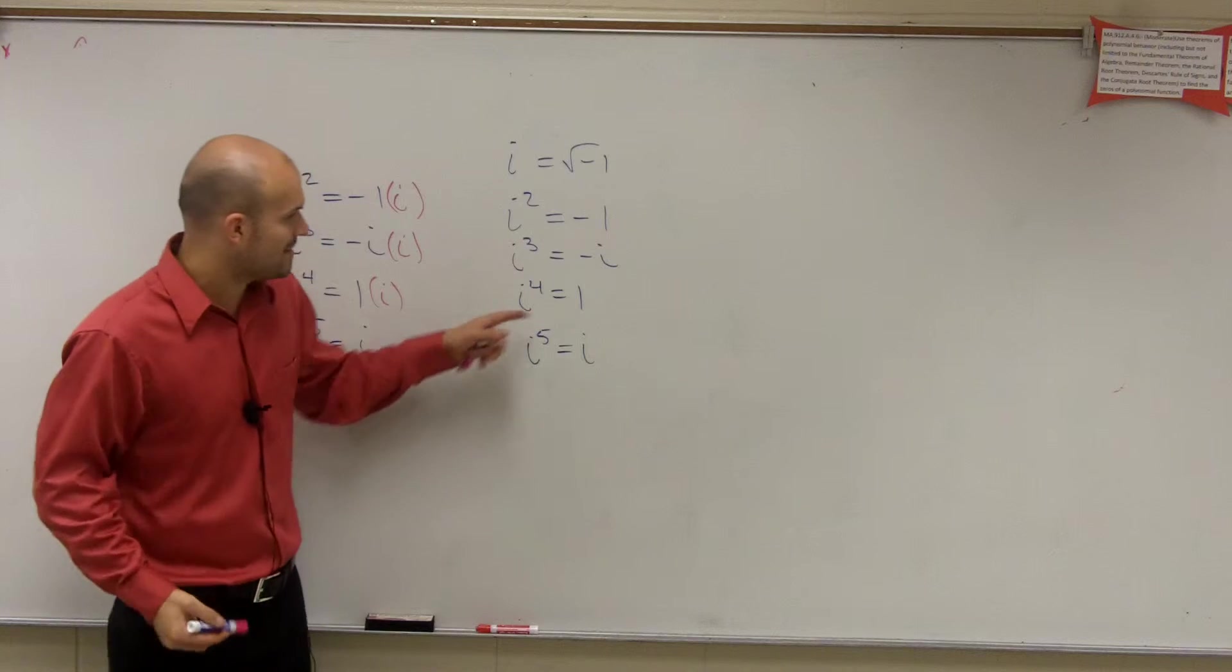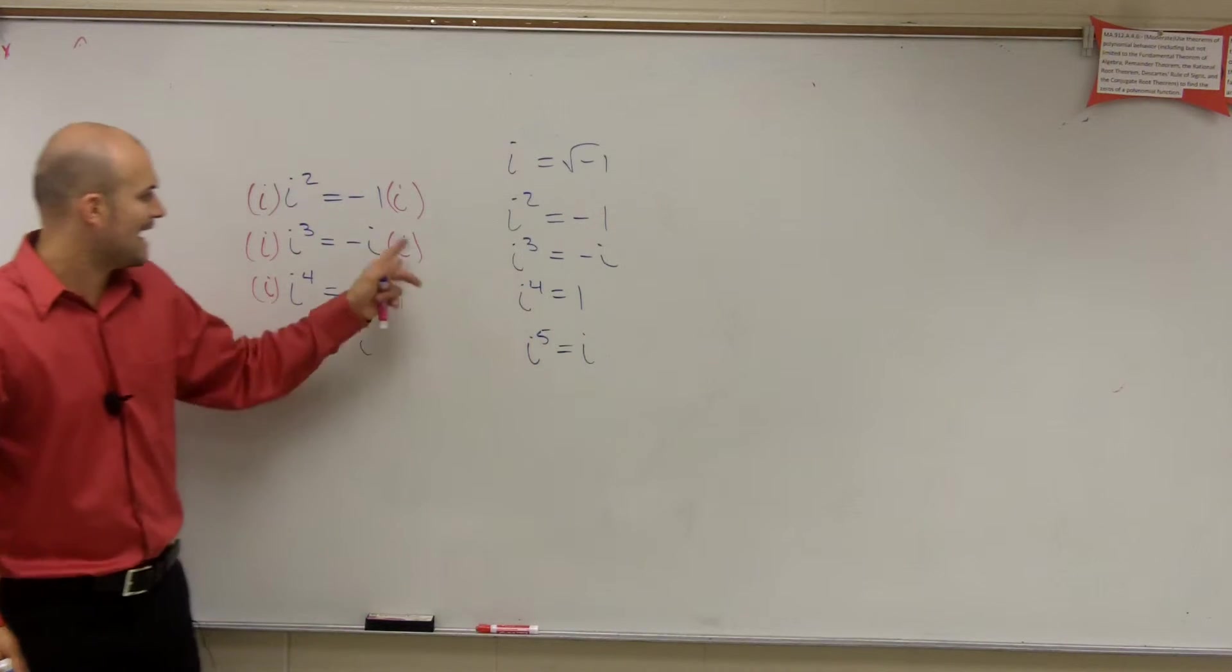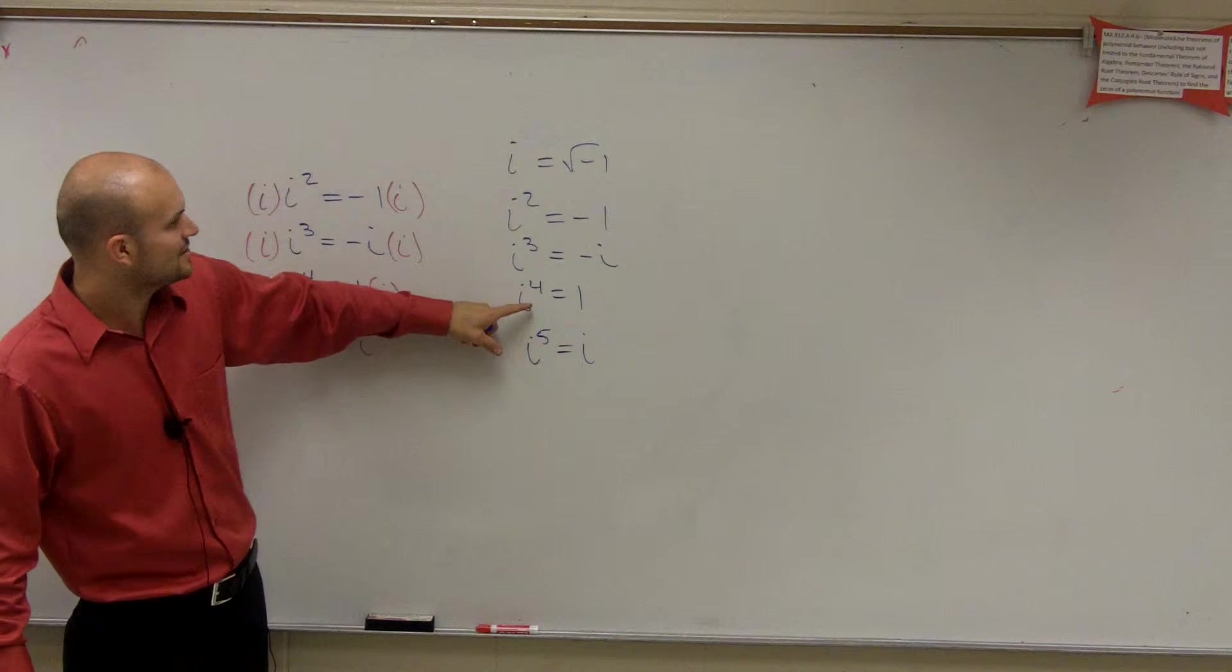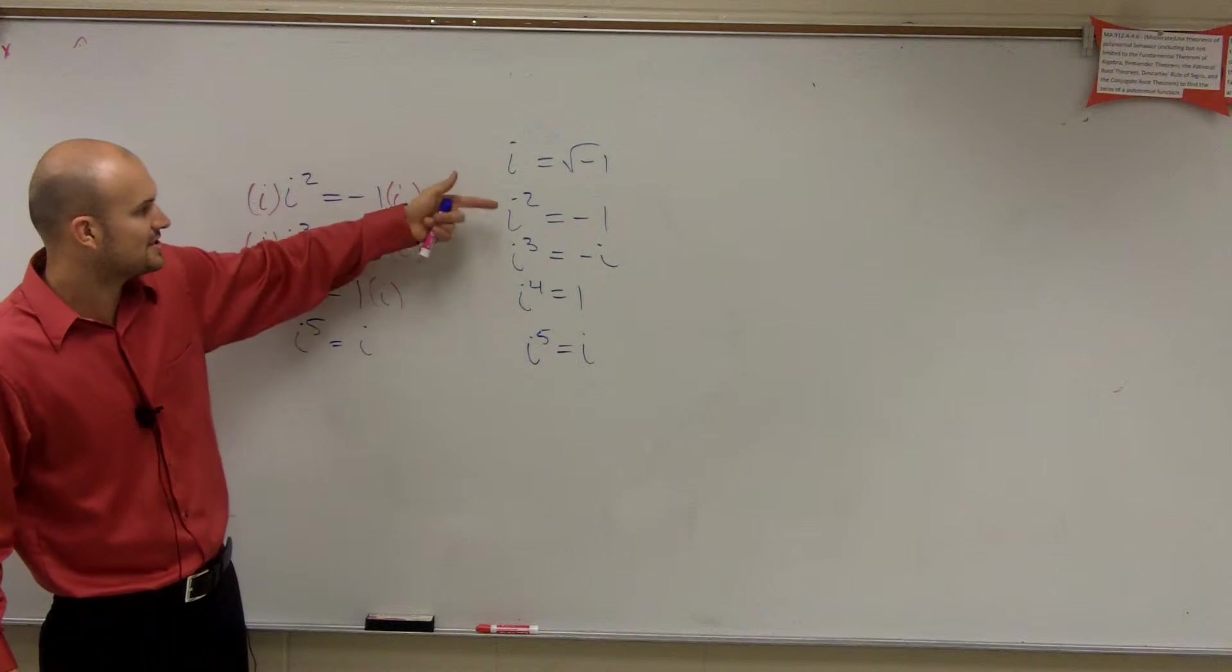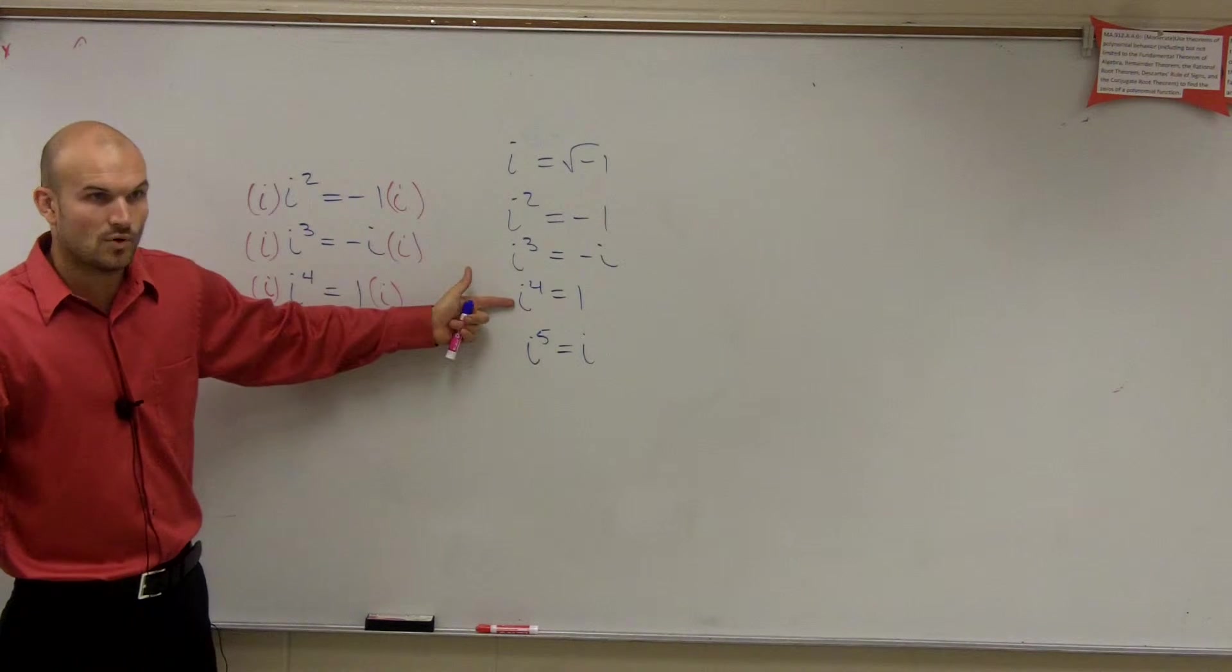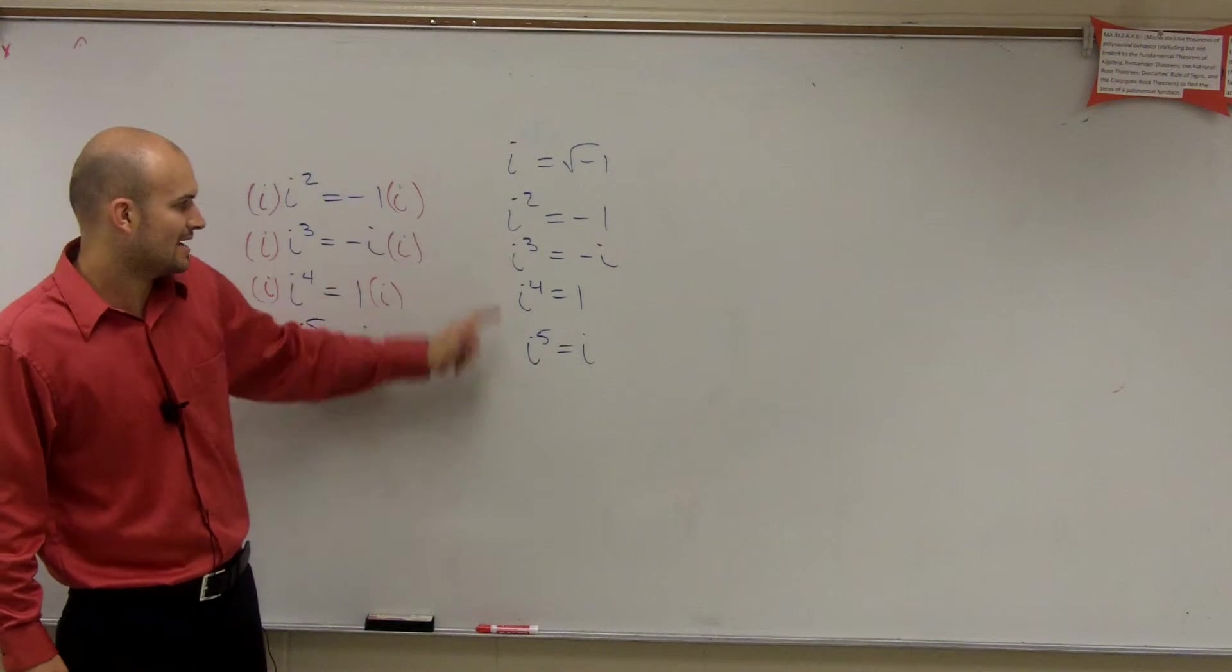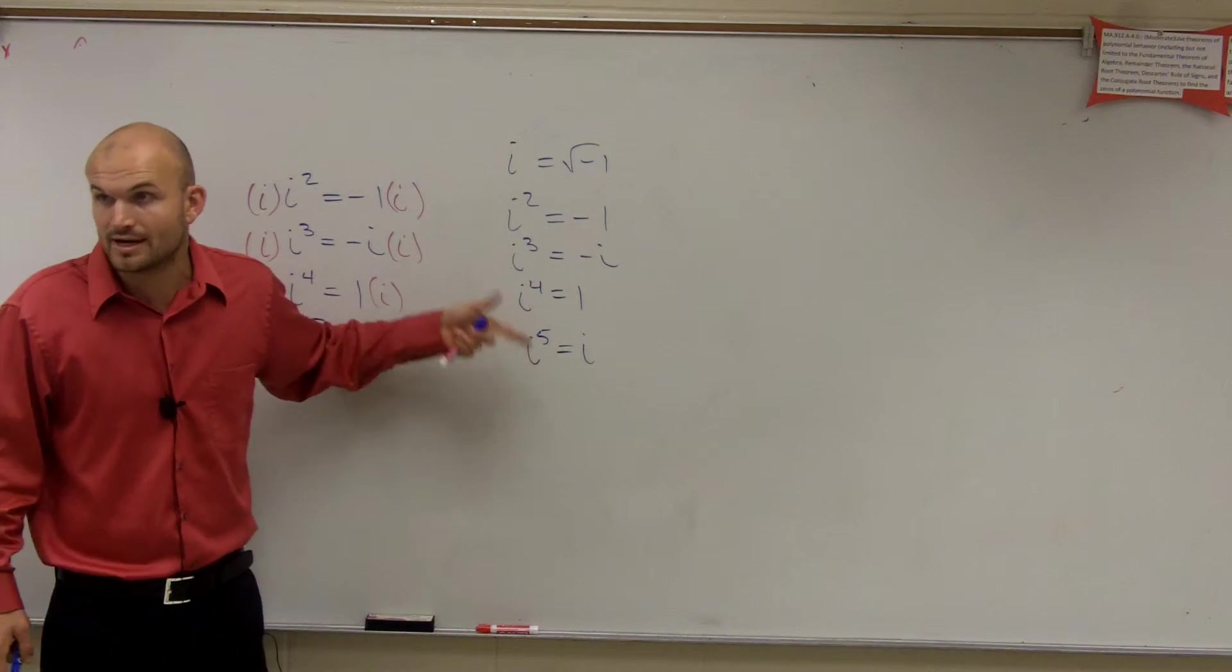Let's go through it. i to the fourth is one. i to the fifth is i. i to the sixth is negative one. i to the seventh is negative i. i to the eighth is one, right? i to the ninth is i. i to the tenth is negative one. i to the eleventh is negative i. Now, i to the twelfth is one. Do you guys see every fourth one, I always get to one?